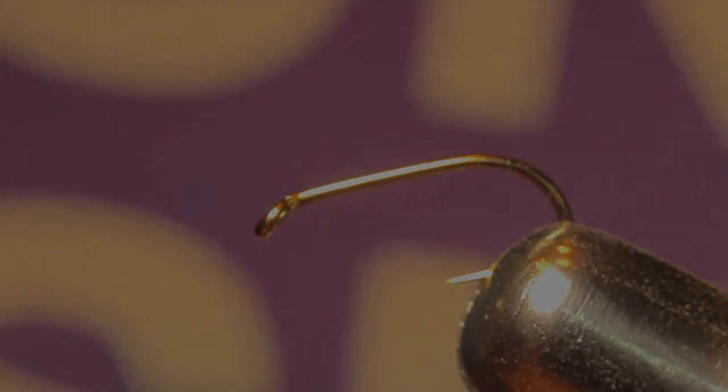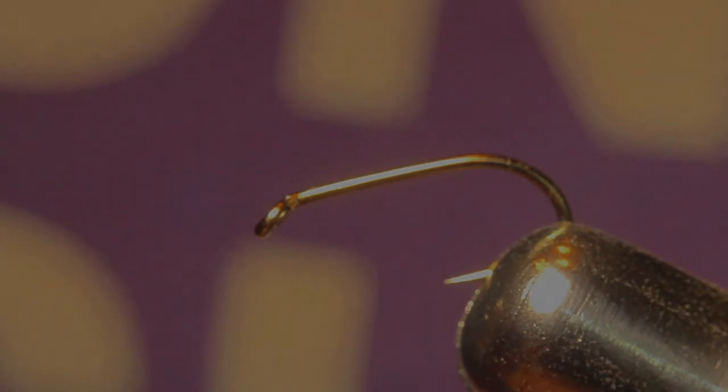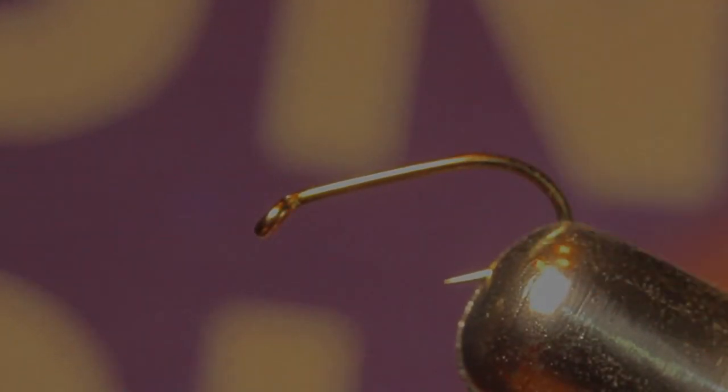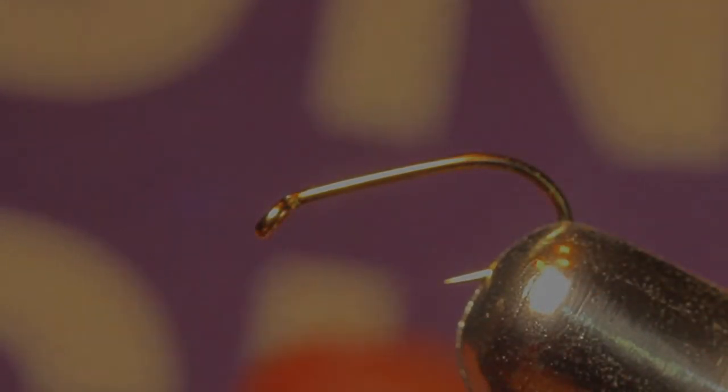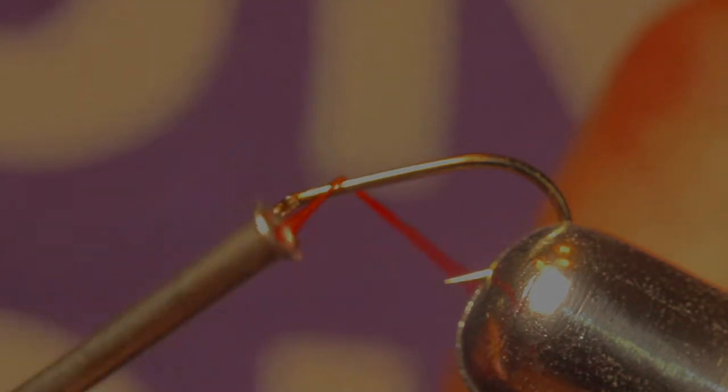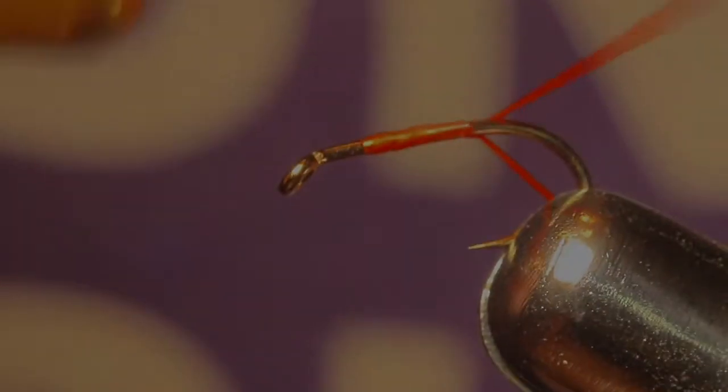Okay, so today I'm going to make a purple and orange bluegill popper. We're going to start out with a size 12 hook and some fire orange thread. It's 140 ultra thread and we're just going to start out by covering our hook with orange thread.